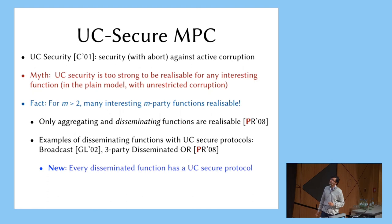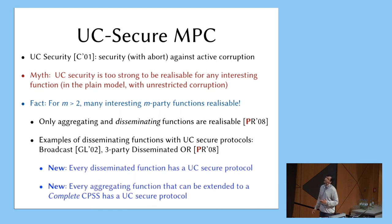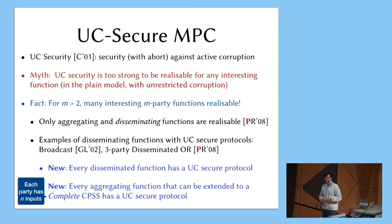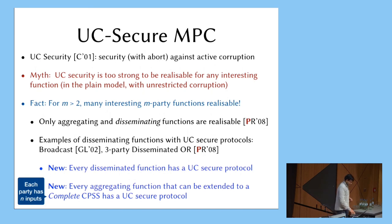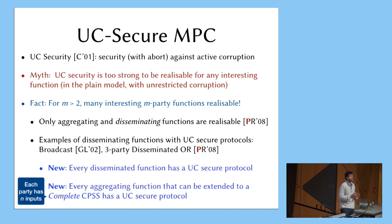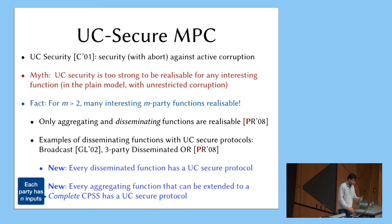Our first result here is that actually every disseminating function has a UC-secure protocol — not just these few special cases. For aggregating functions, our protocol works for something called complete CPSs: complete means it's like a Latin square where everybody has N inputs, where N is the output alphabet size. And it's not just functions which are complete CPSs — even functions which embed into a complete CPS function get a UC-secure protocol, because you can restrict the domain to a subset and still get UC security.